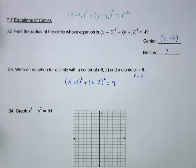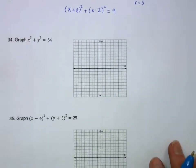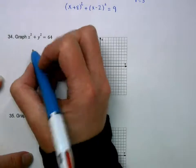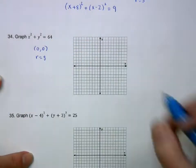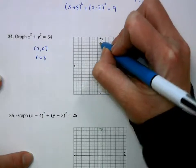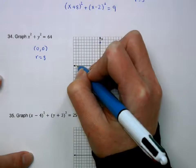Then we can graph. So graphing, the center here is going to be 0, 0. The radius is going to be 8. So from the center, I'm going to go 8 on all of these axes. And then do our best to draw a circle.